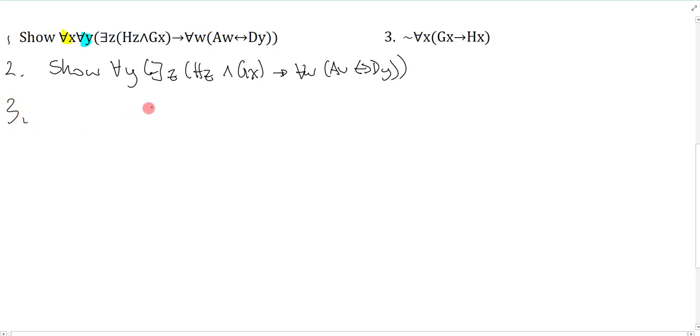Now I do it again, because now this is the main connective, and I need to get rid of this universal. So I'm going to show another instantiation, and I just get there exists a z, Hz and Gx, arrow for all w, Aw bi-conditional Dy.